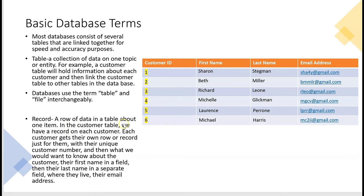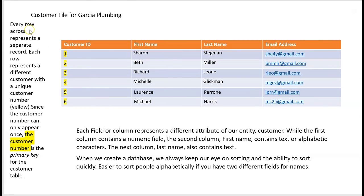A record is a row of data in a table about one item. Row number two contains the record for Beth Miller — her first name, last name, and email address. Each customer gets their own row or record with a unique customer number. For example, Beth Miller's customer number is two and Sharon's is one. Each customer having a unique number is very important because that's how we connect the customer table to other tables.